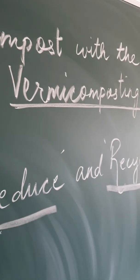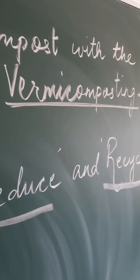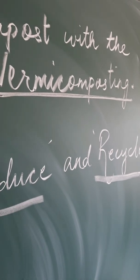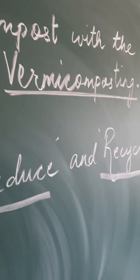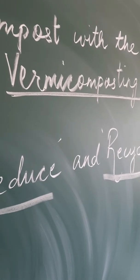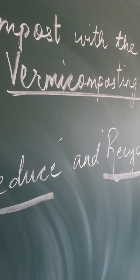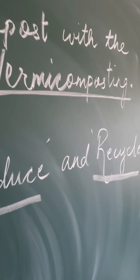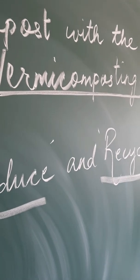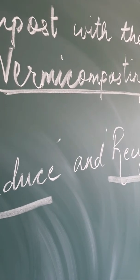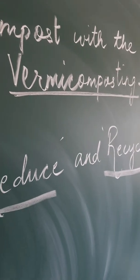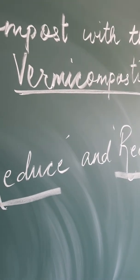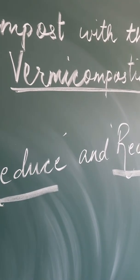The method of preparing compost with the help of red worms is known as vermicomposting. And what is compost? The method of preparing compost with the help of dead decaying matter of plants and animals is known as compost. If you want your compost to be in a better form, you just add red worms to it.